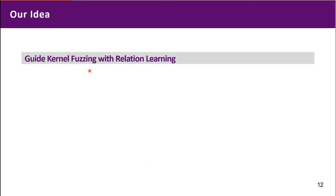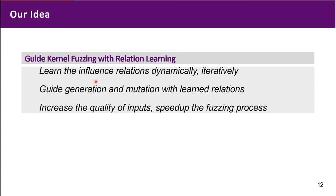Therefore, we want to guide the kernel fuzzing with relational learning. That is, we want to first learn the influence relations between syscalls dynamically, step by step. And we guide the mutation and generation with learned influence relations.